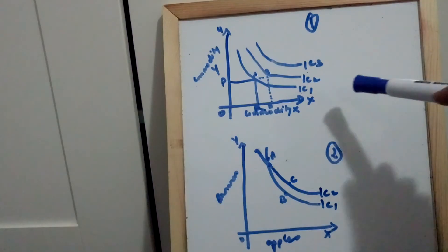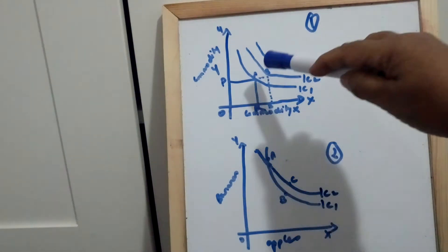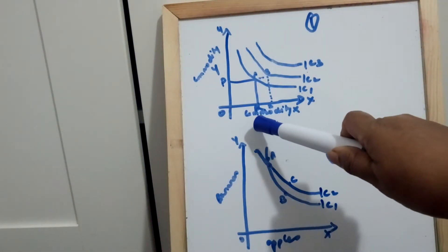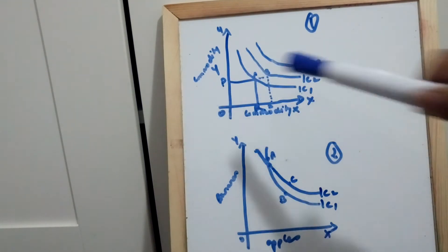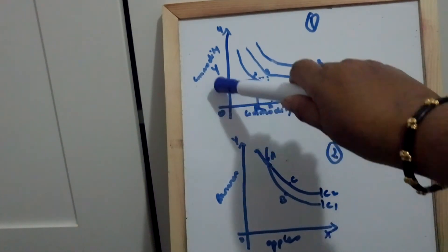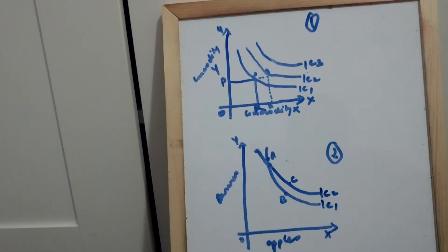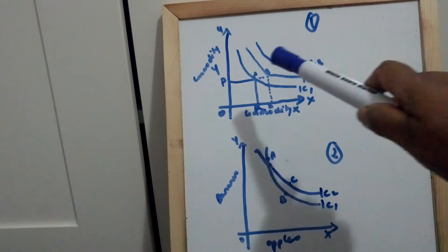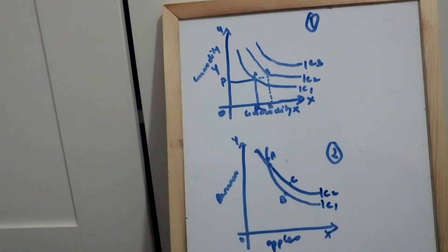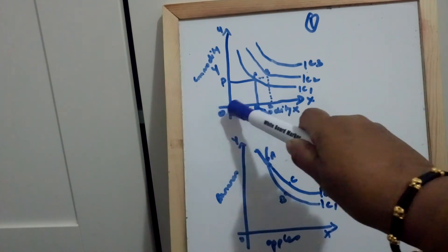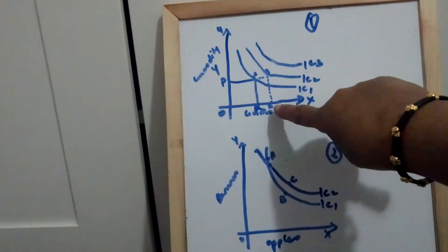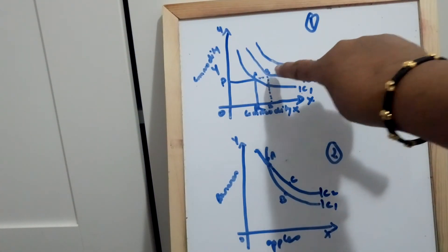The third property: higher indifference curves represent higher levels of satisfaction. In this diagram you can see IC1 — at point A, OR units of commodity X and OP units of commodity Y is the combination. On IC2, the combination extends to OS units of commodity X and OP units of commodity Y. Here OS is greater than OR.